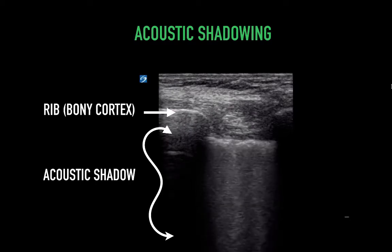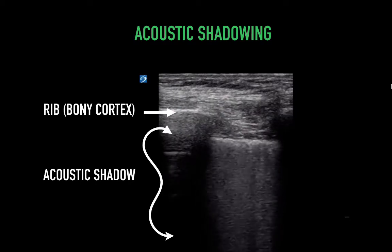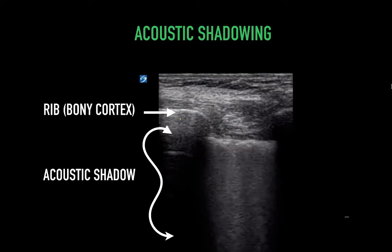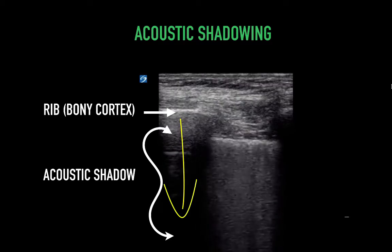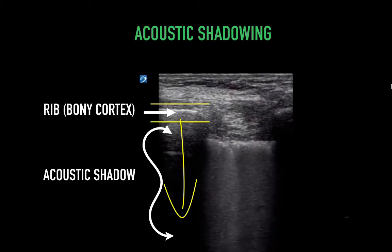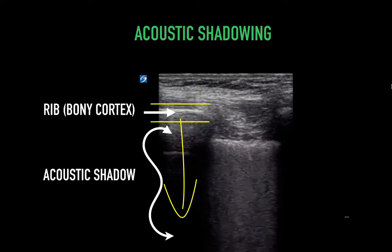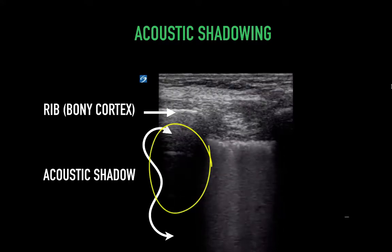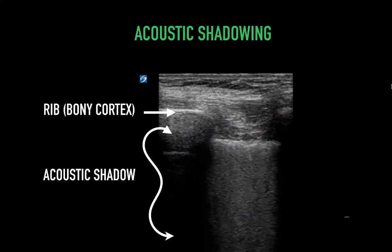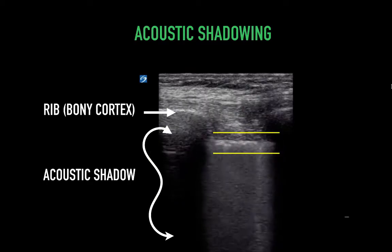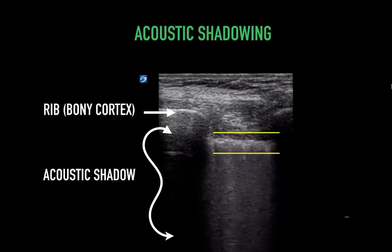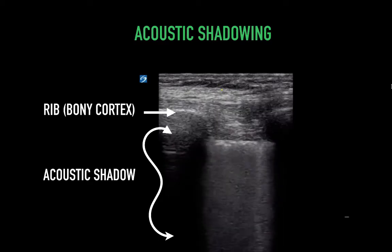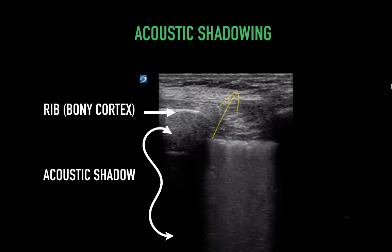Acoustic shadowing occurs with a particularly strong reflector or attenuator, leading to a diminished ultrasound beam. We see lost imaging data distal to the reflector or attenuator. This is often recognized below the rib or bony cortex, where we see a lack of imaging data — what you're seeing beneath here is in fact an artifact. This is often seen at the pleural line as well, with a healthy tissue interface, as the big difference in acoustic impedance leads to the pleural line being a strong reflector, or a bright hyperechoic line.